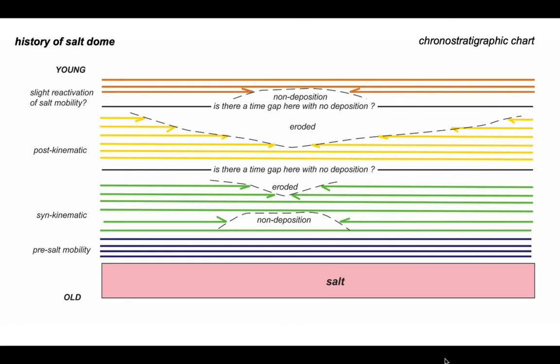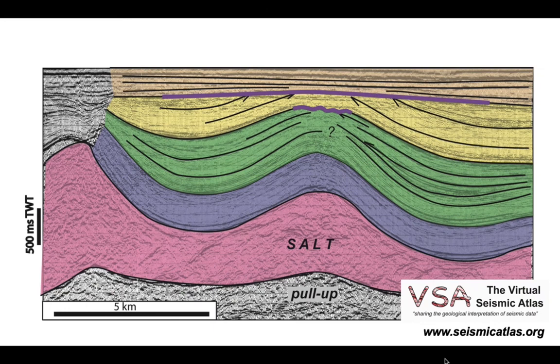So there's our history represented on the chronostratigraphic chart, and down the left-hand side we can interpret the strata in terms of its relationship to salt mobility as either being pre-salt mobility, synkinematic, post-kinematic, and whether indeed there's been a slight reactivation of the salt. So the salt moved in pulses, so an example there of taking apart the stratigraphy around the salt dome.